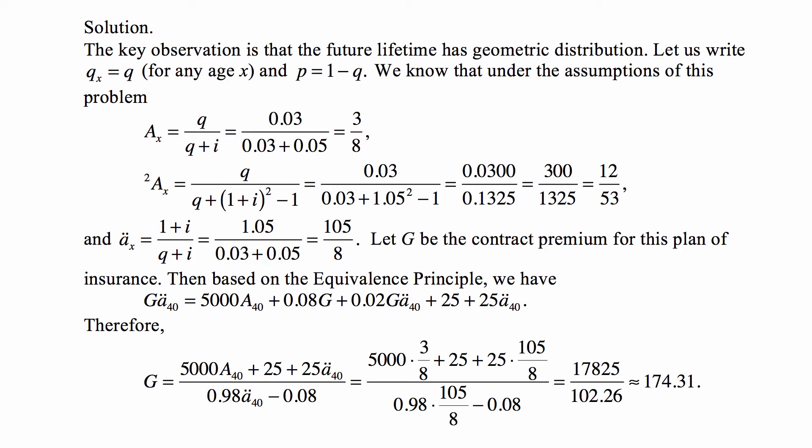2ax is q/(q + (1+i)² - 1), so it's 0.03/(0.03 + 1.05² - 1). You could guess immediately that 2ax is what you get when you double the force of interest in the first formula. You should memorize it, but you don't have to, because you know what happens to i when you double the force of interest - it becomes (1+i)² - 1. So we plug in all the numbers; this is 12/53.